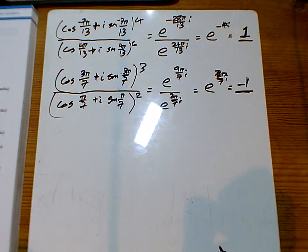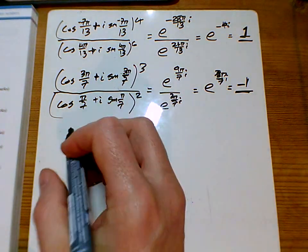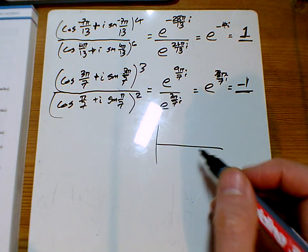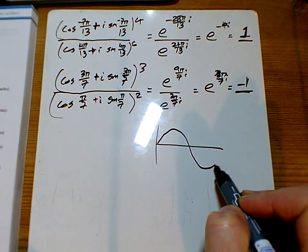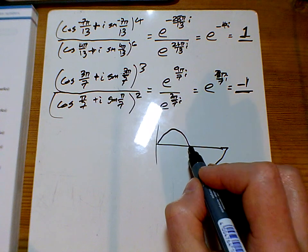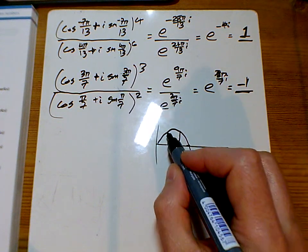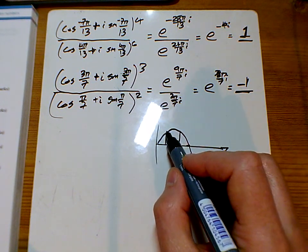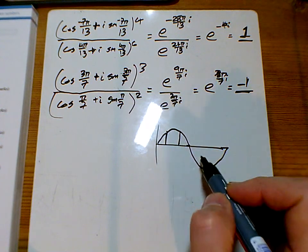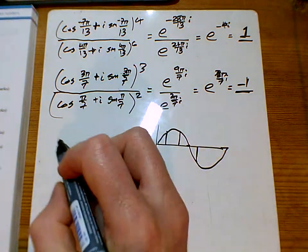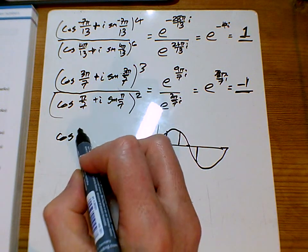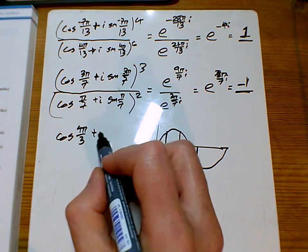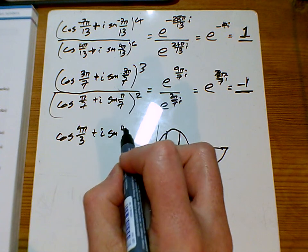And the bottom one, same sort of ideas here, looking at the symmetries. So the first one, I'm looking at the 2π. So where is 2 thirds π? 2 thirds π is here. 2 thirds π has actually got the same sine as π, as 1 third π here. And it's the negative of that one there. So I've got 4 thirds π, and that one there is going to be the same, plus i sine 4 thirds π.